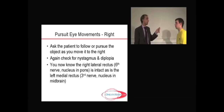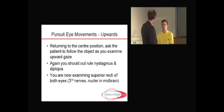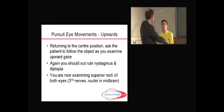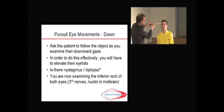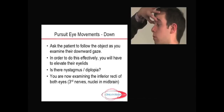Most people do eye movements in an H-type fashion, but this doesn't lend itself to understanding. Instead, come back to the middle, turn the stick on its side, and keeping the head still, ask the patient to look up. The vast majority of pull in both eyes upward uses the superior recti muscles, supplied by the third nerve with nuclei in the midbrain. Then move the stick down — gently holding the eyelids open if needed, always asking permission first — the main pull downward is the inferior recti in both eyes, also supplied by the third nerve with nuclei in the midbrain.